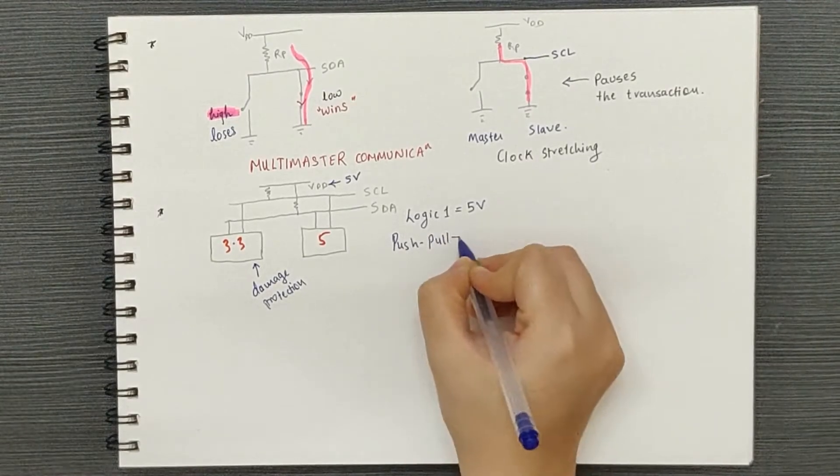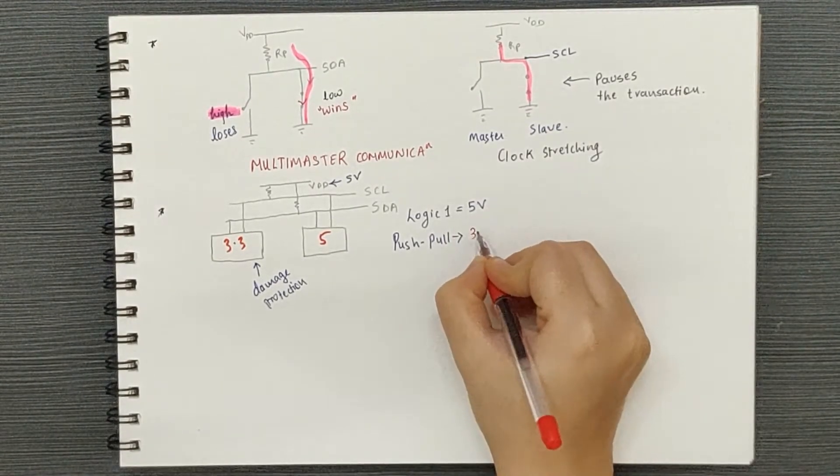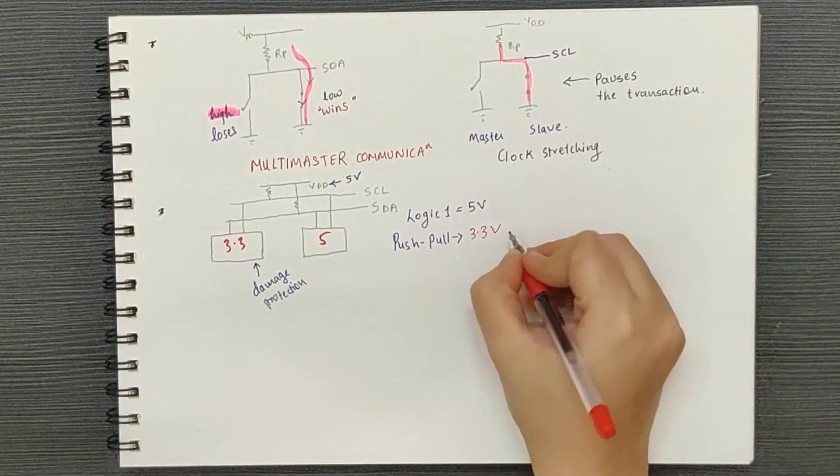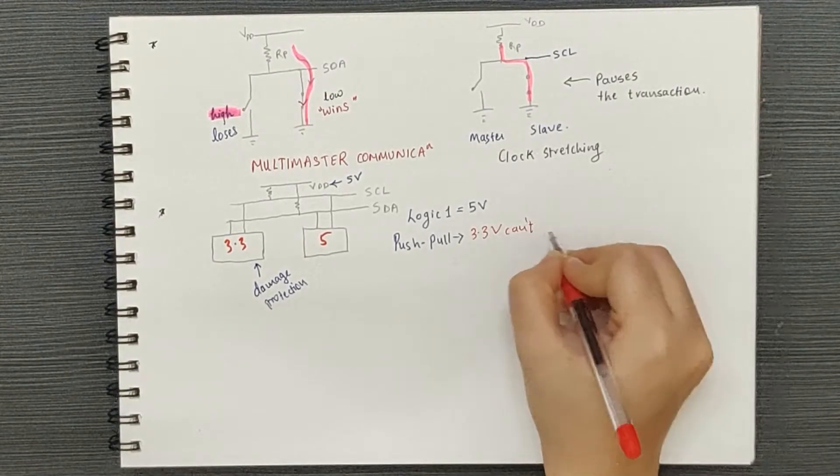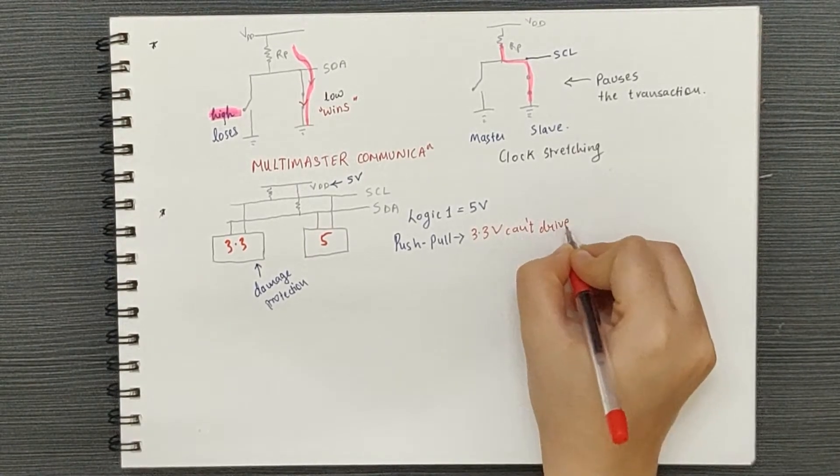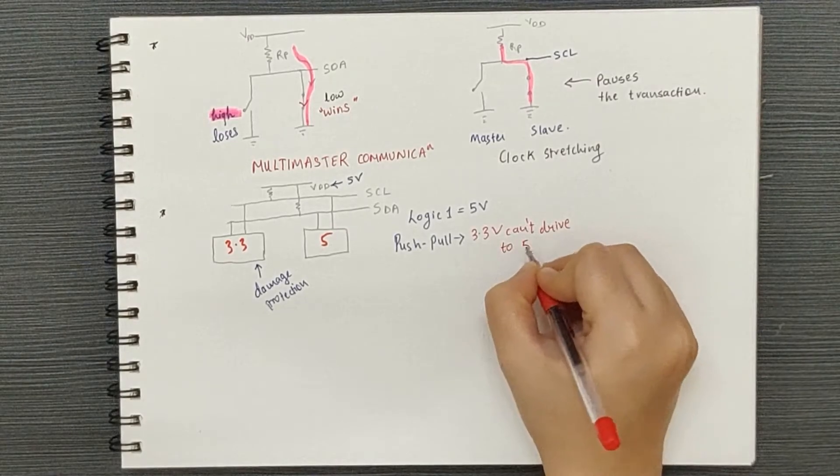The open drain configuration causes the logic high to reach 5V. In case of the push-pull output stage, a 3.3V device cannot drive to 5V. Alright,